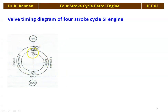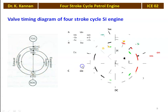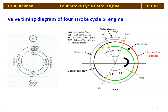This is how the theoretical valve timing diagram is drawn. Theoretically, the inlet valve opens exactly at TDC and closes exactly at BDC. But practically, that is not possible. In the actual valve timing diagram for the four-stroke cycle SI engine: the inlet valve opens before the top dead center — roughly 15 degrees before TDC — and the inlet valve closes not exactly at BDC but some 30 degrees after the bottom dead center.